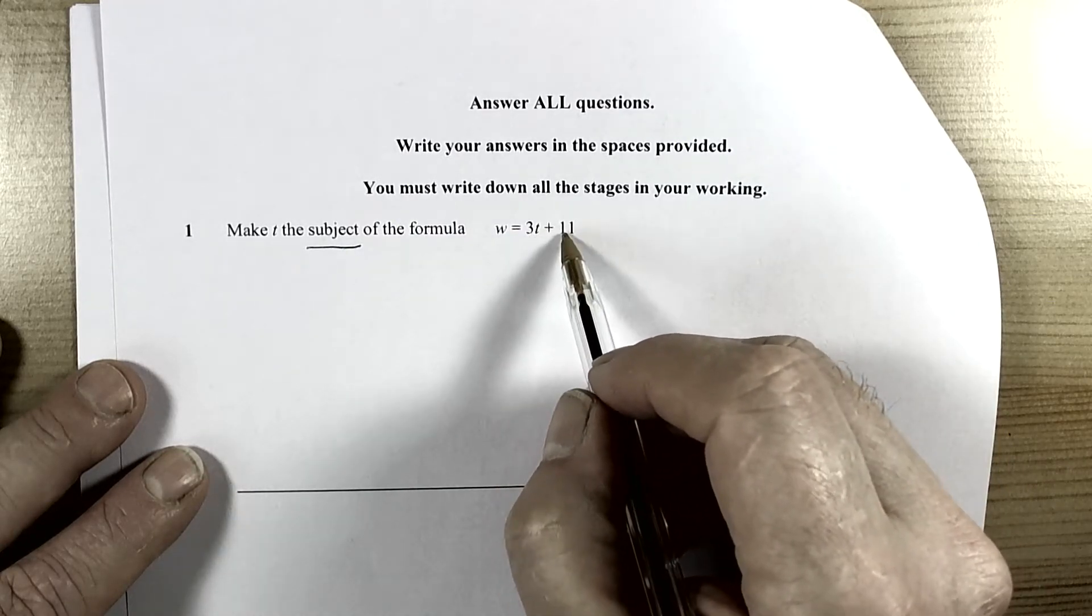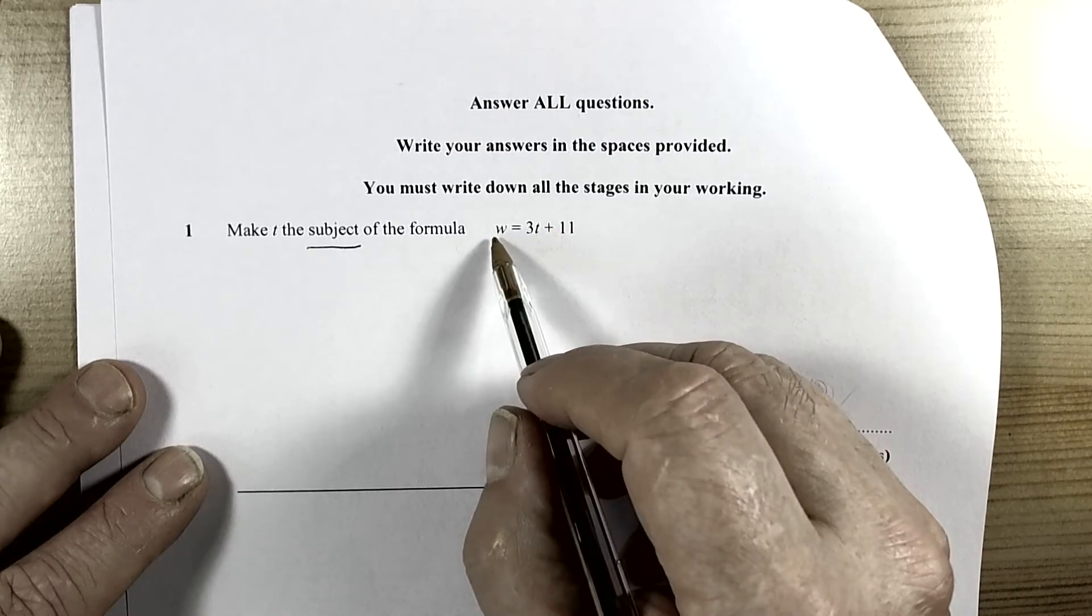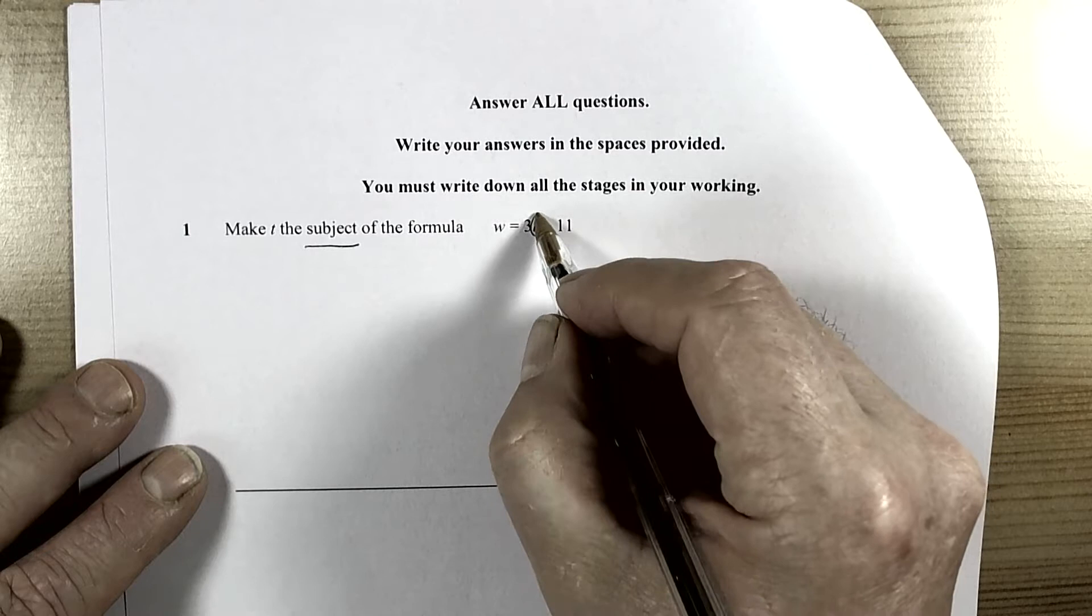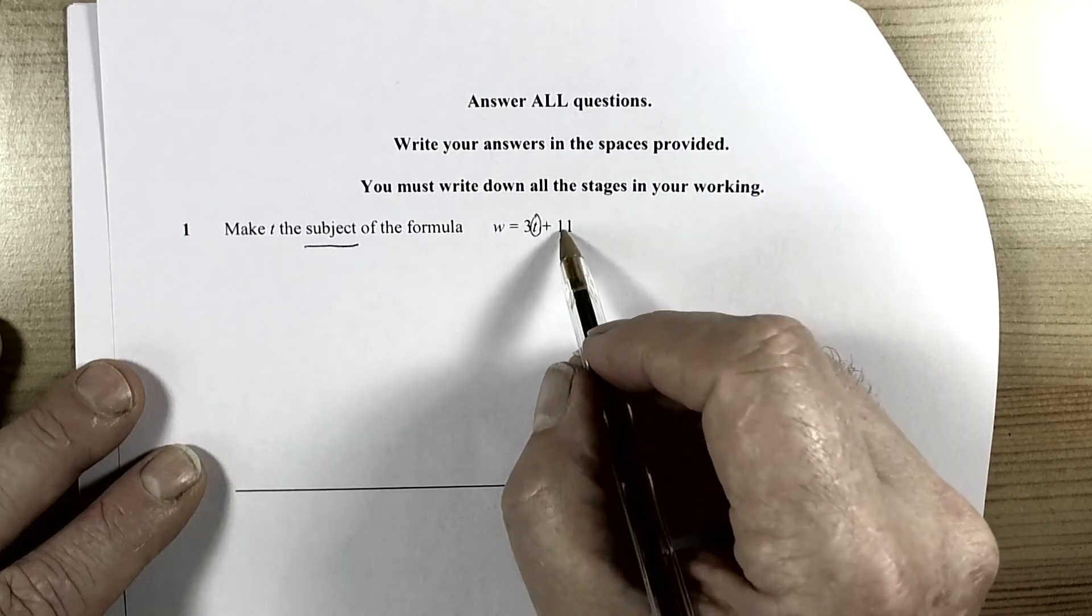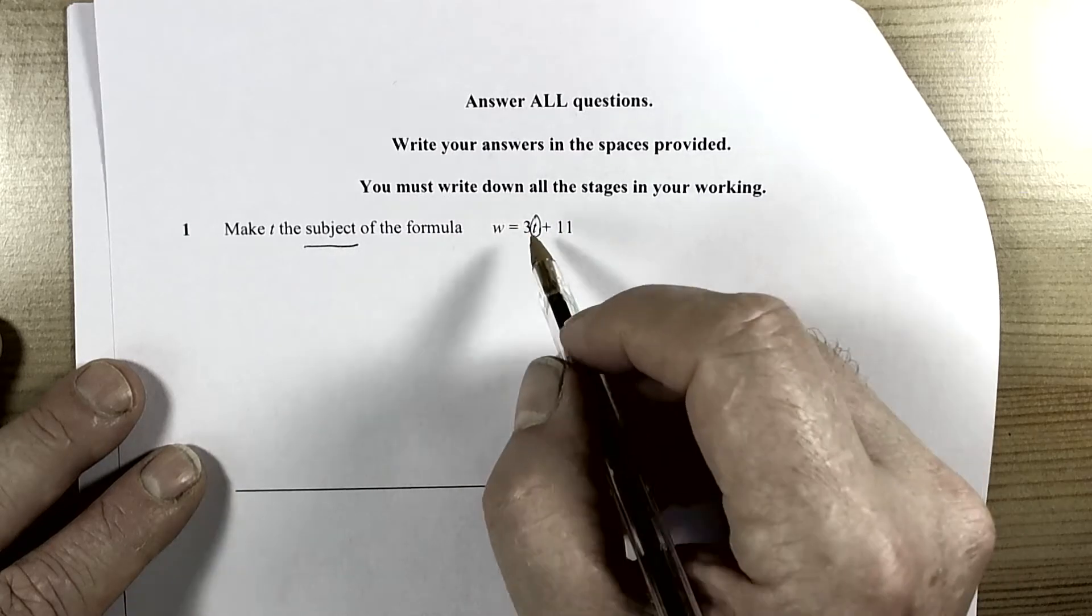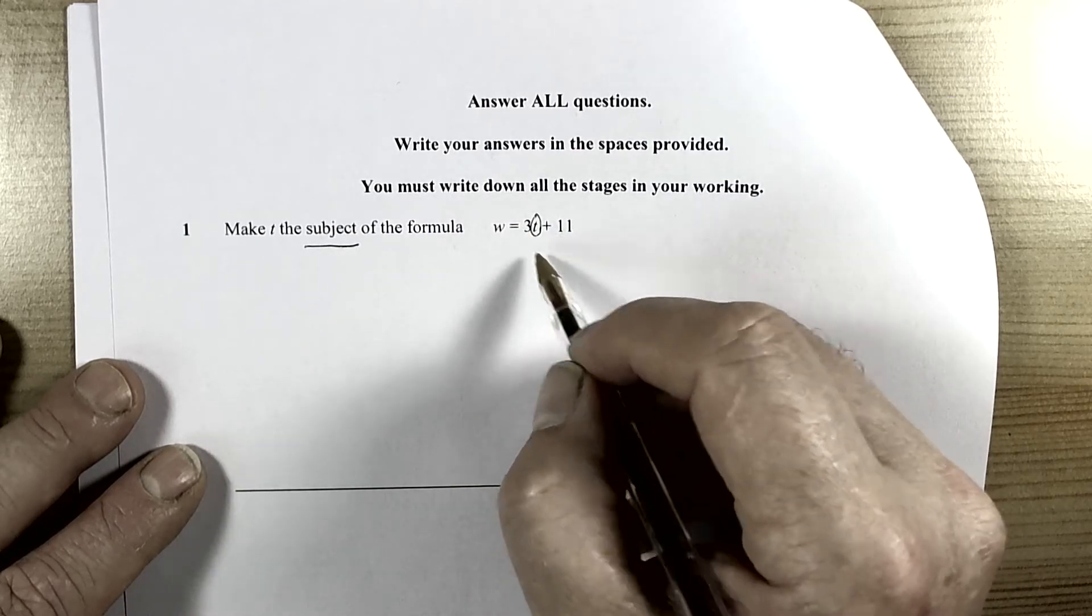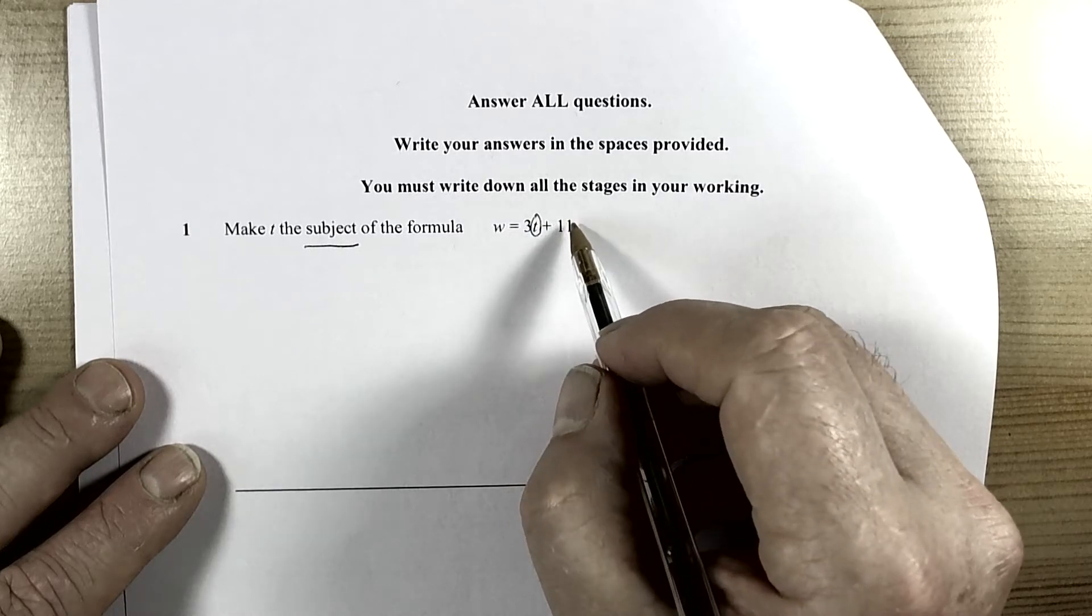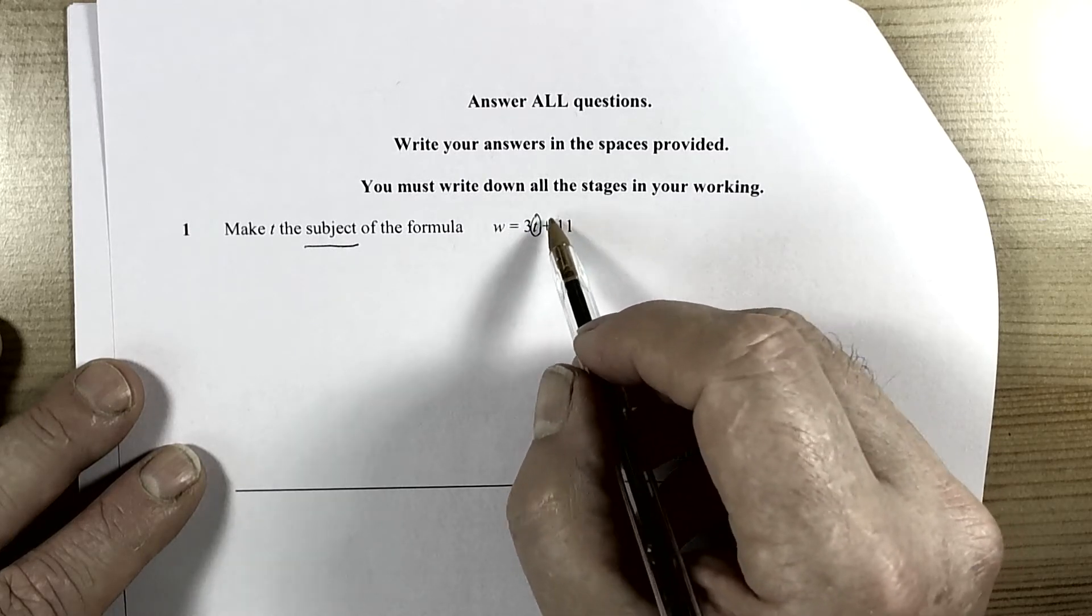At the moment we have 3t and also we have plus 11, and it is all equal to w. So t is already positive, we are going to leave it on its own. That means we have the 11 and the 3 to move to the left hand side of the equals. We always move things by doing the opposite operations. Always deal with terms that are not involved in the subject letter first, unless there is a root.